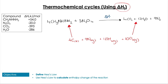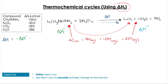Now we've completed a thermochemical cycle, we're able to calculate this value of delta H. Due to Hess's Law, it is going to be equal to the route taken by going in the direction of the red arrow. So if we label the process on the left delta H prime and the process on the right delta H double prime, we can write that the overall delta H is equal to negative delta H prime plus delta H double prime. The reason it's negative delta H prime is because we're going against that first arrow. Now we just need to calculate the actual values and plug them in.